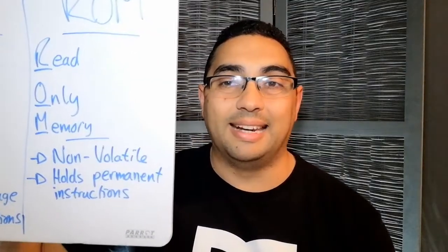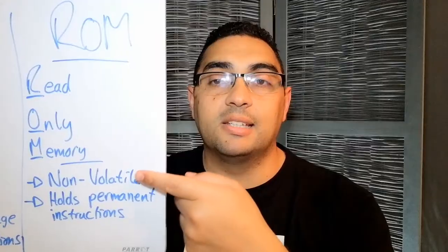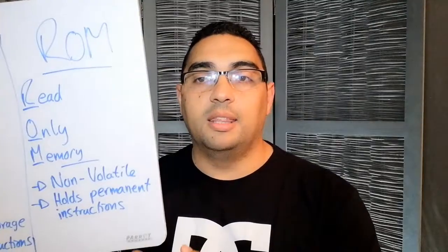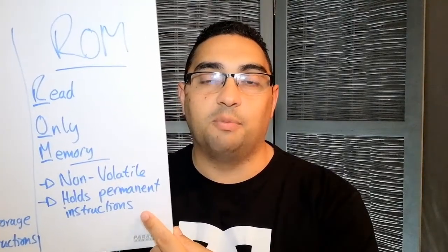ROM stands for Read Only Memory. It is non-volatile, meaning it cannot be changed. ROM holds permanent instructions. When the PC is built, these instructions get put in, and when the PC starts up they get acted on. ROM is non-volatile — you cannot change it. The instructions have already been programmed into the ROM to do specific things. That's the important difference between RAM and ROM.